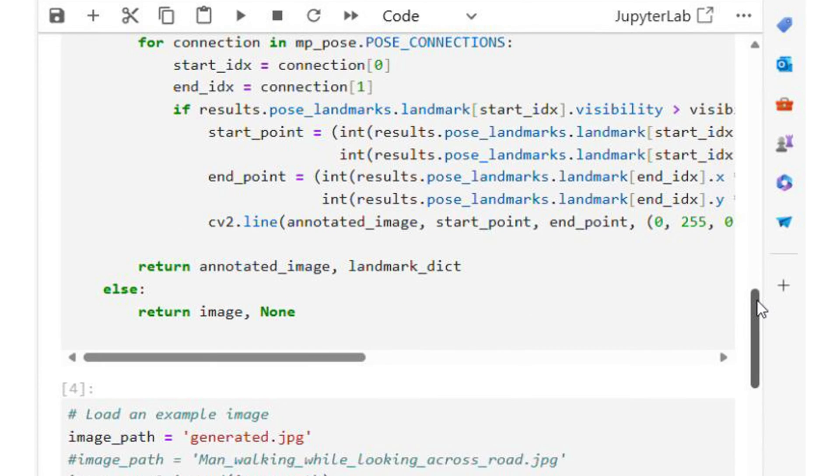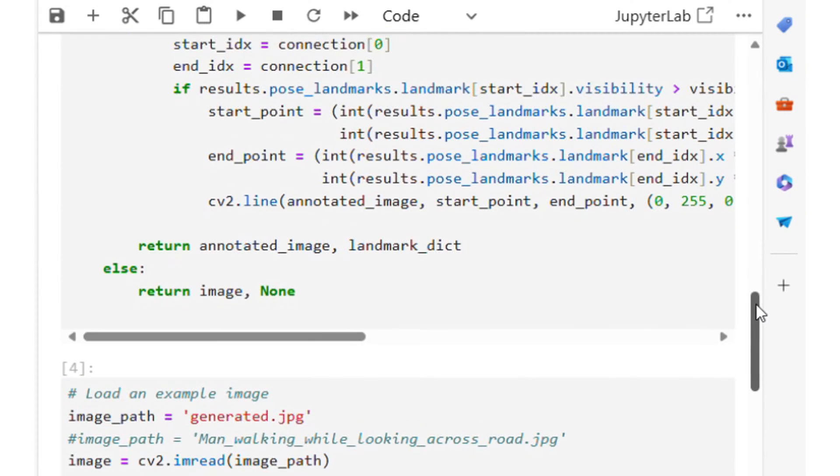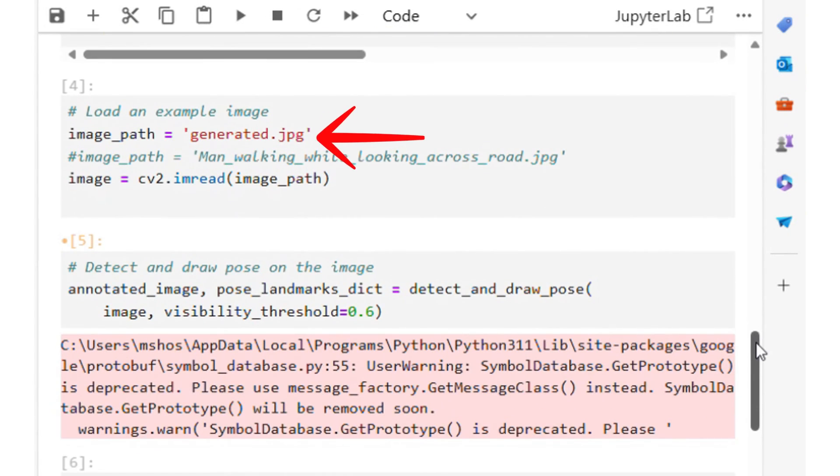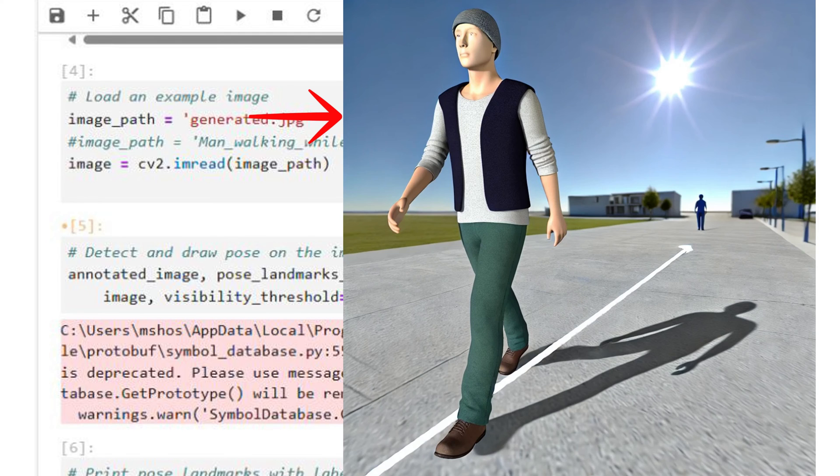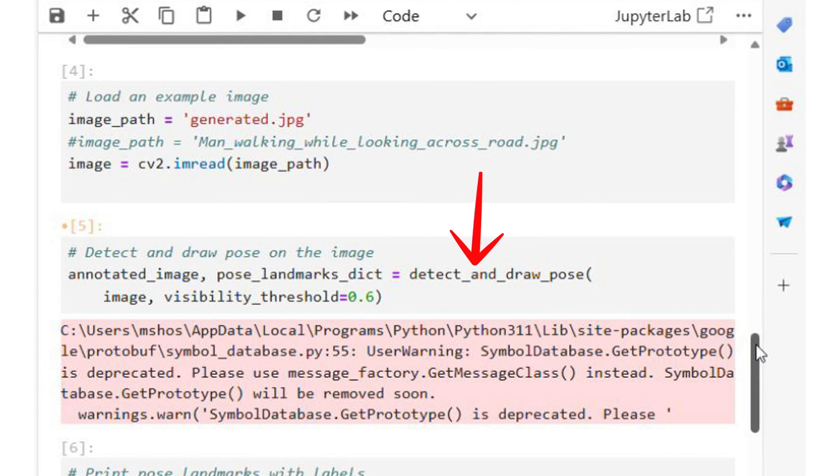Okay, the function returns an annotated image and a dictionary that has all the landmark points in pixels coordinate system. We load the image from the file. Here is the image file where a person is walking. Here we call the second function we wrote to detect and draw the pose on the image.